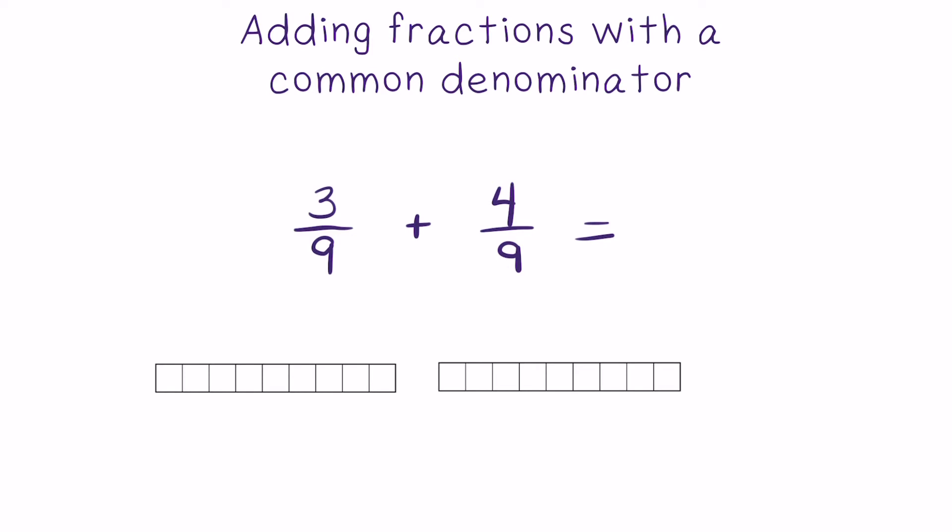Both addends are shown as a whole that has been broken up into 9 equal parts. As you can see in the visual, the first whole has been broken into 9 equal parts with 3 of those 9 parts shaded in. The second whole has also been broken up into 9 equal parts with 4 of those equal parts shaded in.